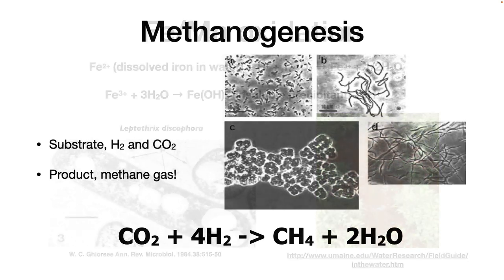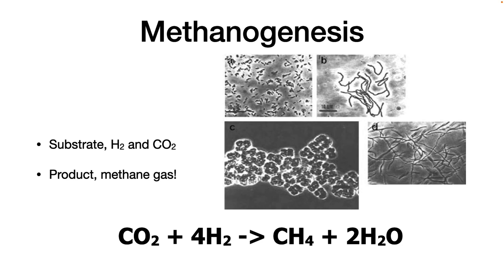As a final example, methanogens take carbon dioxide and hydrogen and generate energy by creating methane. They are the only group of living organisms that produce a hydrocarbon as an end product. In these lectures, we will talk about common parts of metabolism that many microbes share, then explore a few of the unique types of microbial metabolism. I hope to give you a foundation in metabolism that you can use if you want to explore further.